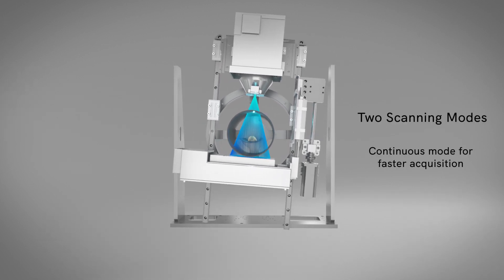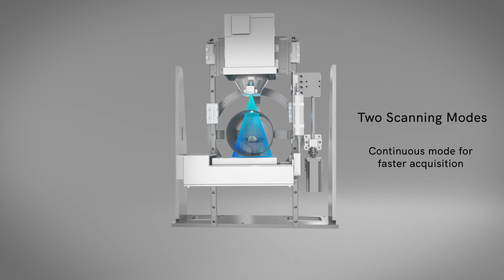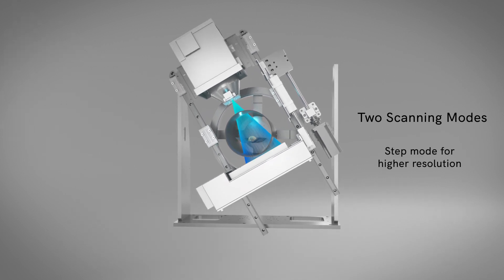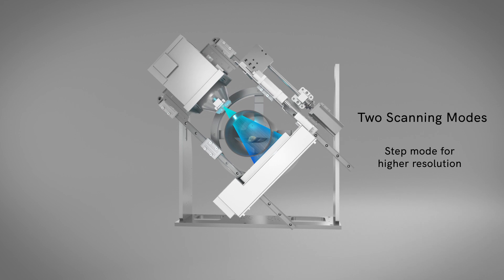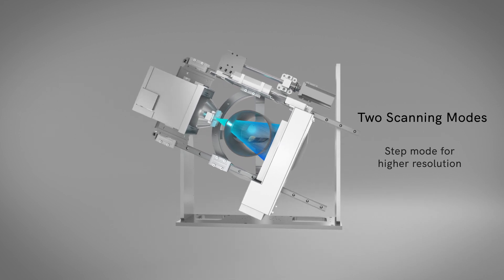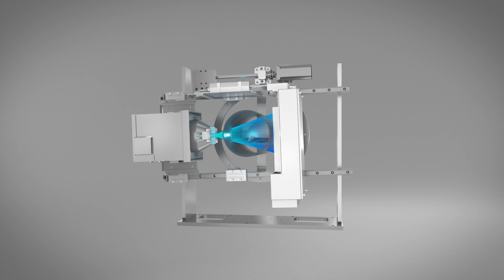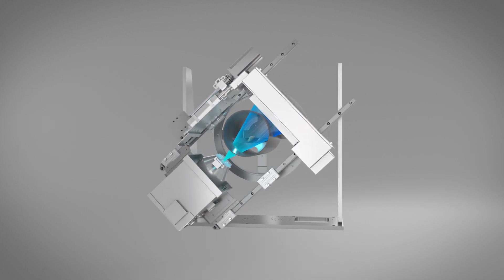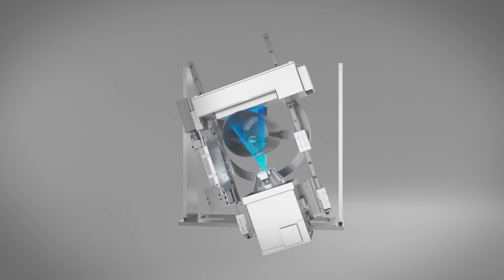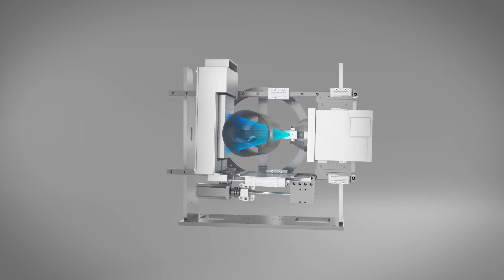In addition to continuous scanning, the Quantum GX3 incorporates a step scanning mode that eliminates motion artifacts, ideal for capturing higher resolution images. The high-precision gantry rotates 360 degrees around the sample to acquire full 3D data with your choice of field of view and magnification.